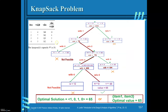Now you decide whether to consider item 4. If you consider item 4, total weight would be 9 plus 3 equals 12, which exceeds the capacity of 10. So this is not feasible. The next option is not considering item 4, leaving weight at 9 and value at 65. Since there are no more items to consider, this is the optimal value and you can stop constructing the state space tree.